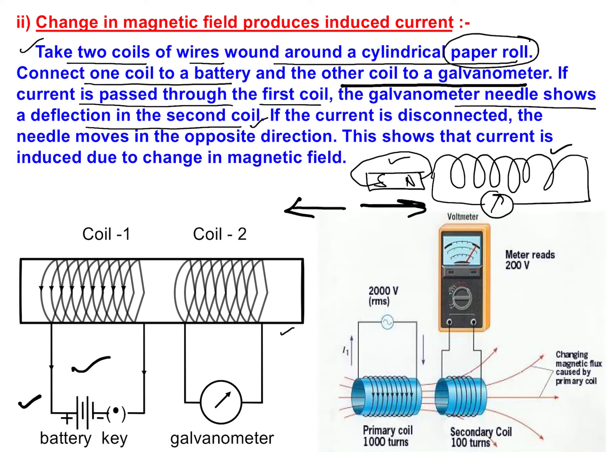When we produce relative motion between a magnet and a coil, there will be a change in magnetic flux, and current will be induced in the coil. Now, we have taken a current-carrying coil. We know very well that when current flows through a coil, that coil will work like a magnet.